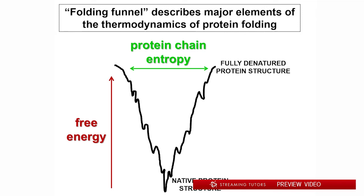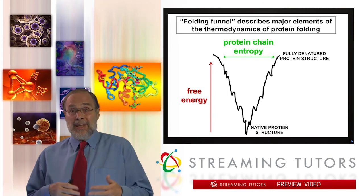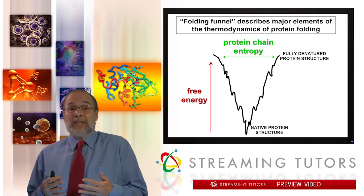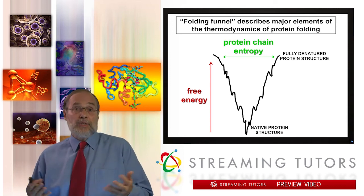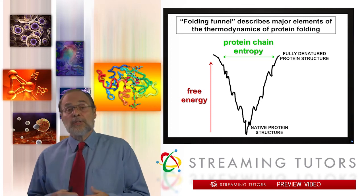As the protein folds going top to bottom, settling from its fully denatured initial structure at the top to its native folded structure at the bottom, notice the entropy of the protein chain is collapsing. The free energy equation would lead us to indicate that should not happen — you should increase entropy, not decrease it; increase disorder, not increase order. But obviously protein chains are much more orderly than their initial random unfolded denatured structure. So what's happening here?